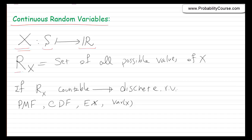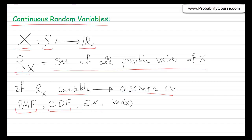We also defined the range of a random variable x as the set of all possible values of x. If the range is a countable set, then we have a discrete random variable. We have been discussing discrete random variables for a while — talking about probability mass function, CDF (cumulative distribution function), expected value, and variance.